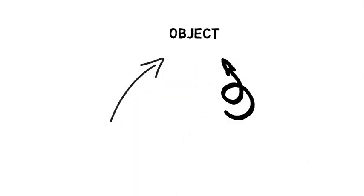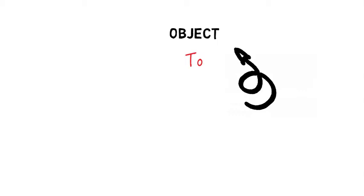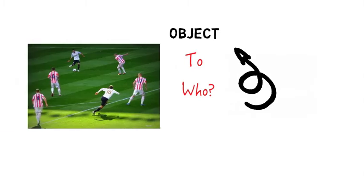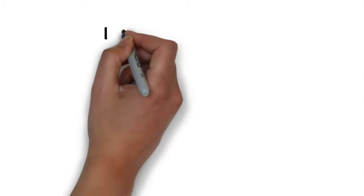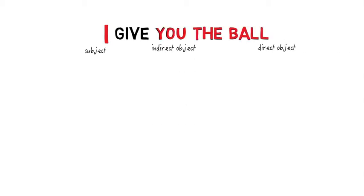Often sentences have an object or two, and an object can be direct or indirect. A direct object answers the question 'what' when asked of the verb. I give — I give what? I give the ball. An indirect object answers the question 'to or for whom' of the verb. I give to whom the ball? I give you the ball. You are the indirect object of the sentence. So the sentence 'I give you the ball' has the subject I, the direct object the ball, and the indirect object you.